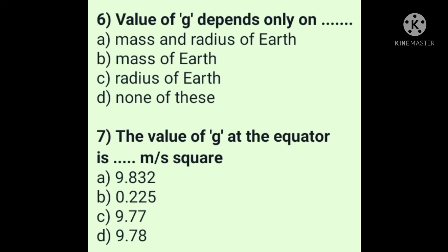Question 7: The value of g at the equator is dash meter per second square. Answer is option C: 9.77 m/s². Our earth is not spherical — it is flat at both poles. The distance between the north pole and the centre of the earth is less than the distance between the centre and the equator. More distance from the centre means a lower value of g, so g at the equator is 9.77 m/s².